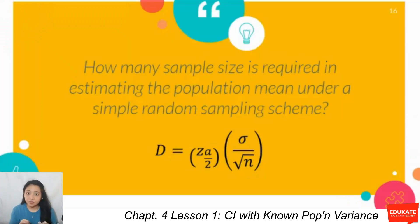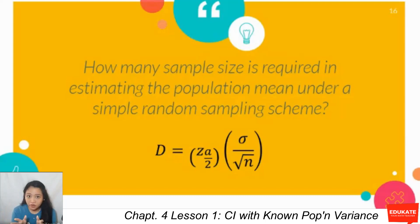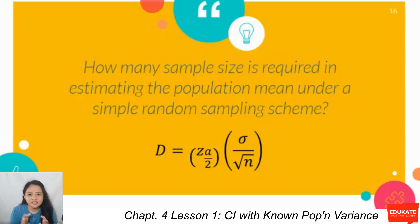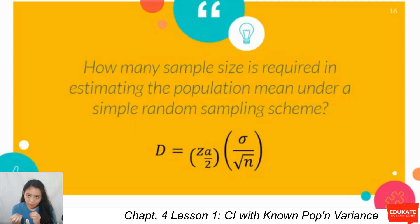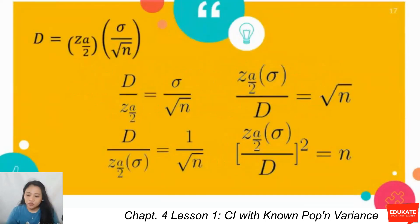A larger sample size leads to a smaller MAD, a narrower confidence interval estimate, and a narrower width. So we started with the confidence interval estimator, then moved to width, then to maximum allowable deviation, and now to the last one: sample size. If asked how many samples are required in estimating the population mean under a simple random sampling scheme, we use the MAD formula: D equals tabular value times standard error. We solve for n — you can pause the video here and see the process on how we get the formula for n.